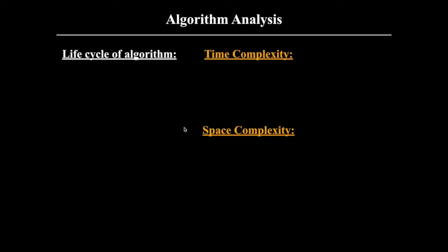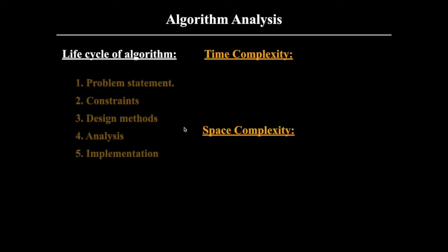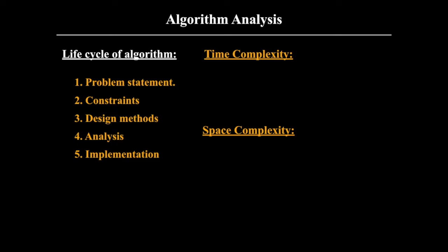Now let's see the lifecycle of an algorithm. Whenever you are trying to solve a problem in a programmatic way, first you need to understand the problem statement, then find out the constraints or conditions given in the problem, and then you have to choose the correct designing method — that is very important. These designing methods can be divide and conquer, dynamic programming, or greedy method. You have to choose any one based on your problem statement, and then write an algorithm.